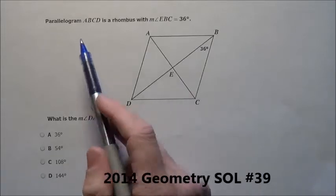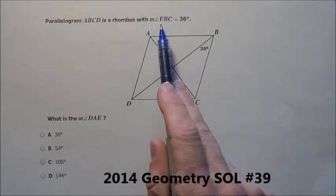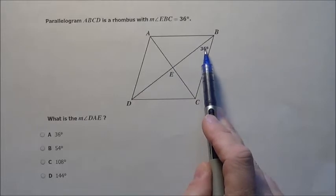Here's problem number 39. It says parallelogram ABCD is a rhombus with measurement of angle EBC, E to B to C, being 36 degrees.